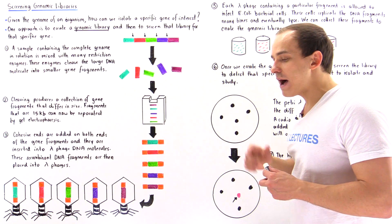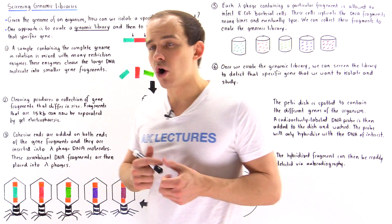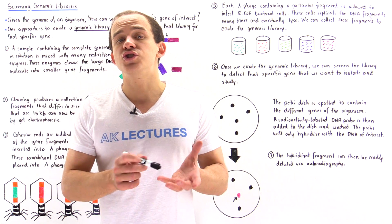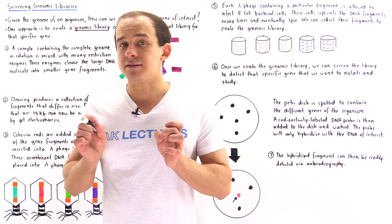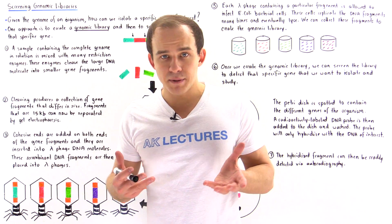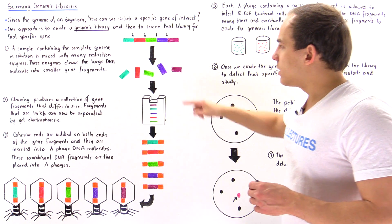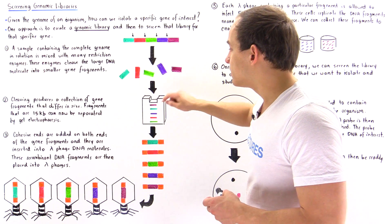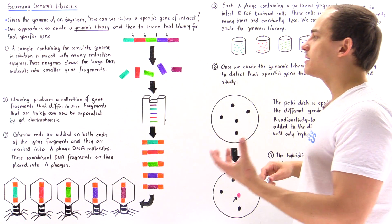Now let's suppose that these five fragments are all different in size — some are large and some are small. In step two, we can use gel electrophoresis to separate the different fragments based on size, up to a size value of 15 Kb, where Kb is kilobases. The fragments that end up at the bottom are the smallest, while the fragments at the top are the largest. Each one of these fragments contains some type of gene.